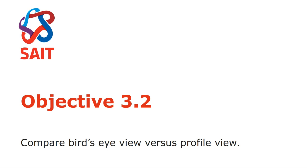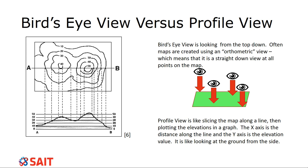With topographic maps we have bird's eye view versus profile view. Bird's eye view is looking down from the top — maps are orthometric, meaning you're always looking straight down at the points of the map, giving a 90-degree view no matter where you're looking. A profile view slices the map along a line and plots it in a graph, where the X-axis is the distance along the line and the Y-axis is the elevation. This is where scale values become really important.